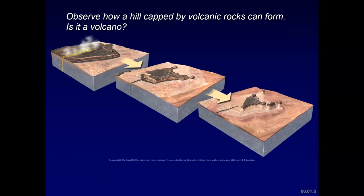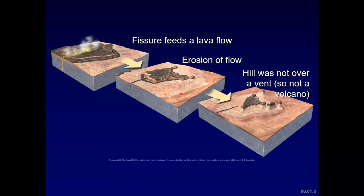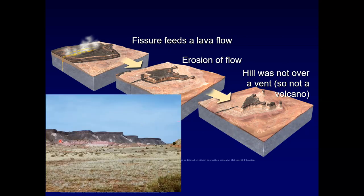We'll look at how a hill capped by volcanic rocks can form, and the question is: is it a volcano? First, we have a fissure that feeds a lava flow — you see lava come out of the fissure. Over time, there can be erosion around that lava flow, and the fissure location, once solidified, is now a dike. With greater erosion, it eventually forms as a flat-top mesa. It's a hill, but it's not a volcano — it was an over-event, kind of to the side of that fissure. A real-life example of this is in the Hopi Buttes of Arizona.